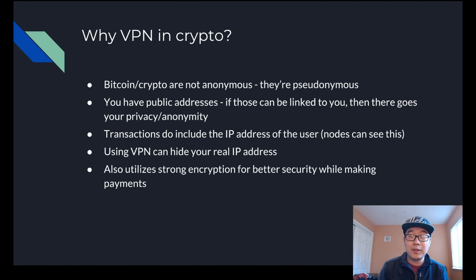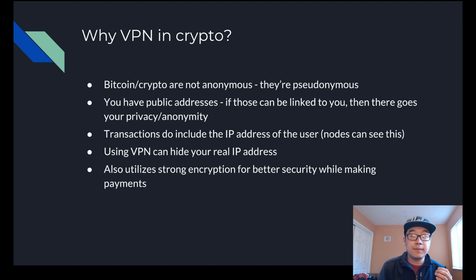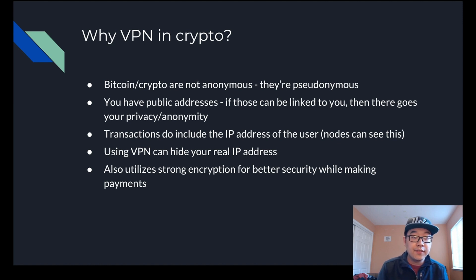What about crypto-specific use cases? Bitcoin and crypto are not actually anonymous because you have public addresses, and if those can be linked to you, there goes your privacy. People can use blockchain analysis to track the flow of your coins and payments. Your transactions actually include the IP address of the user, and Bitcoin nodes can see this — so it's a good idea to use a VPN when sending Bitcoin transactions to hide your real IP address.